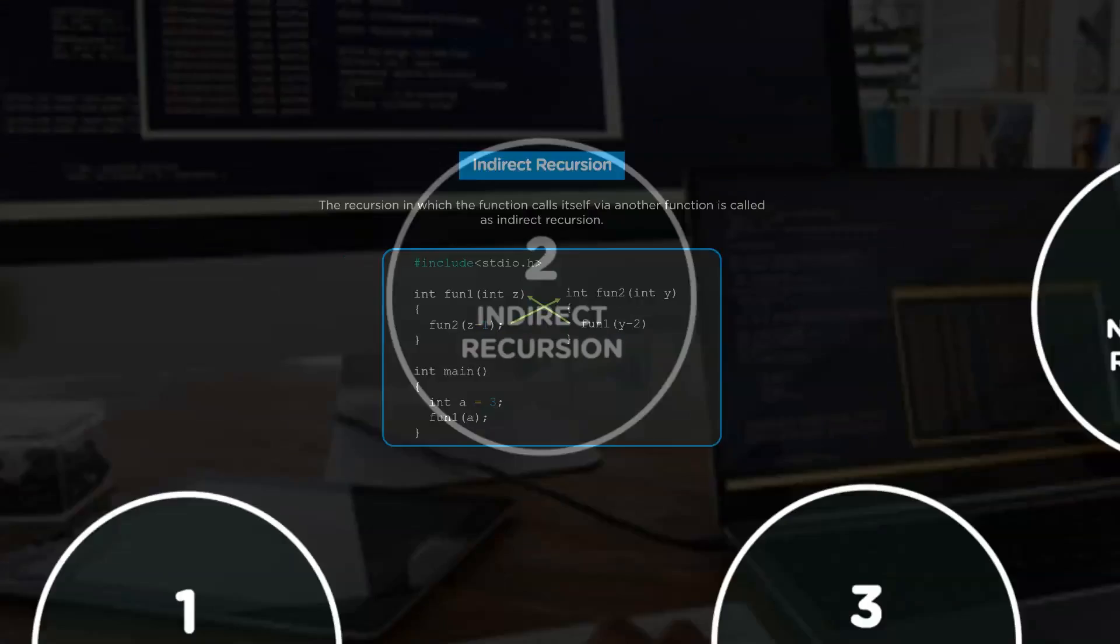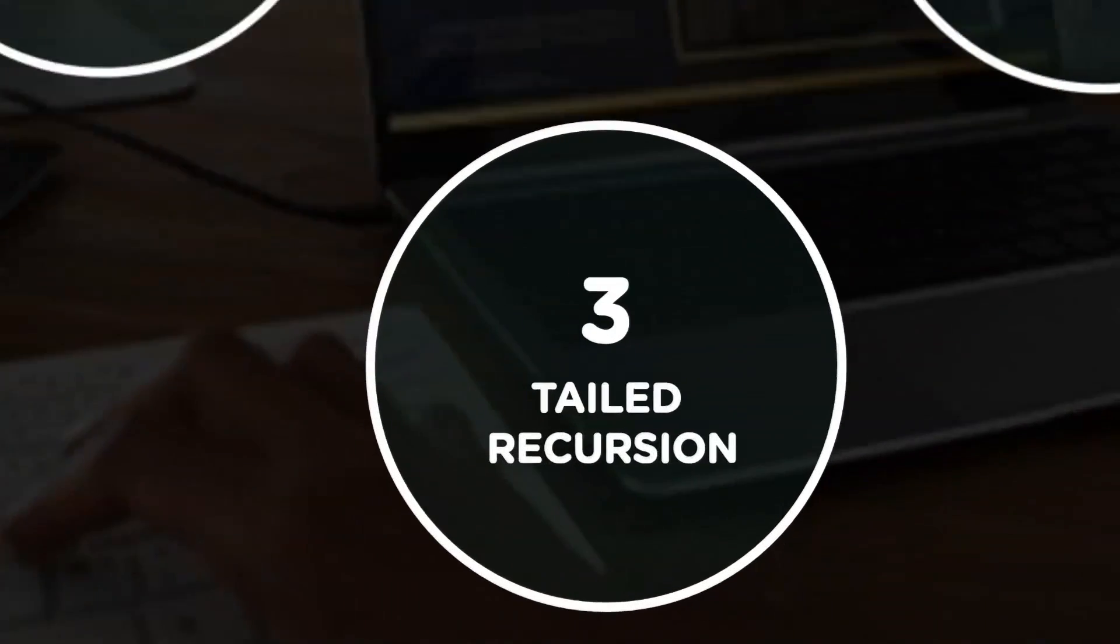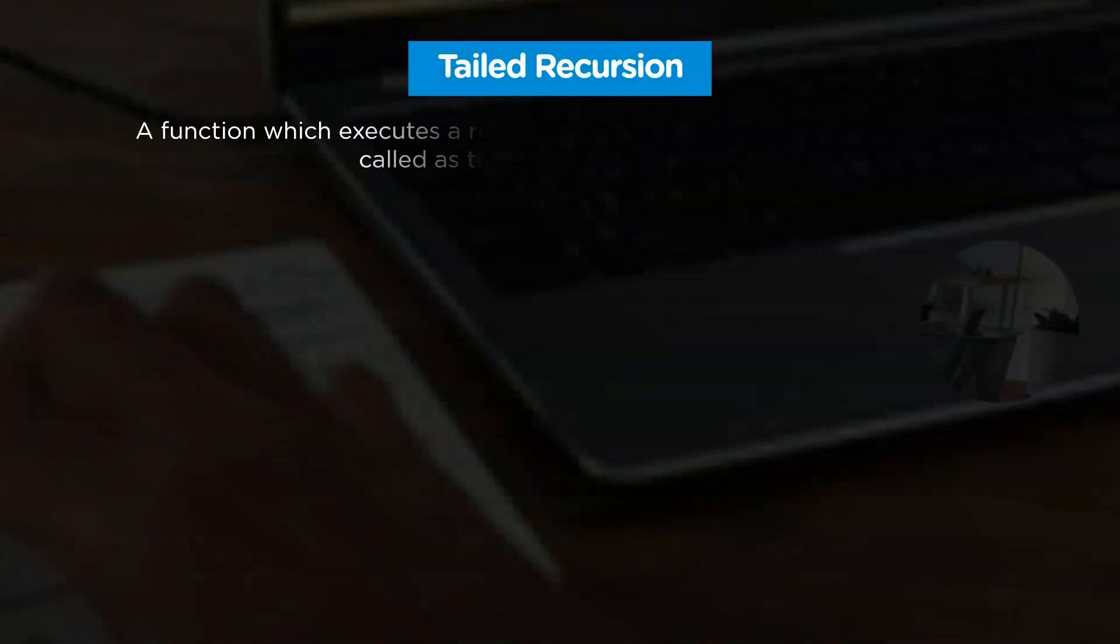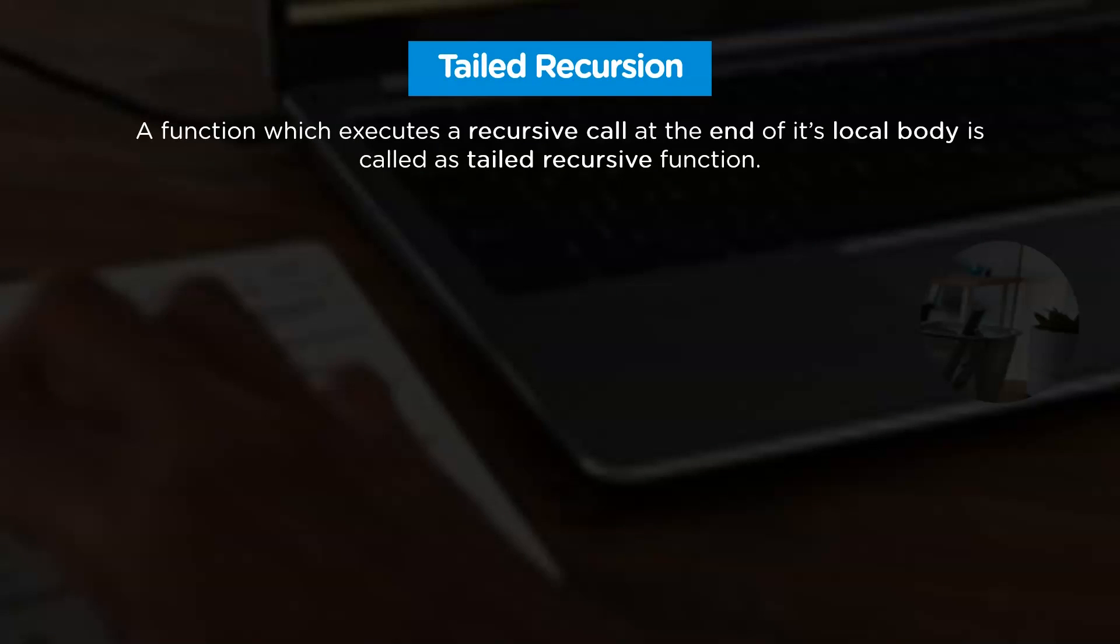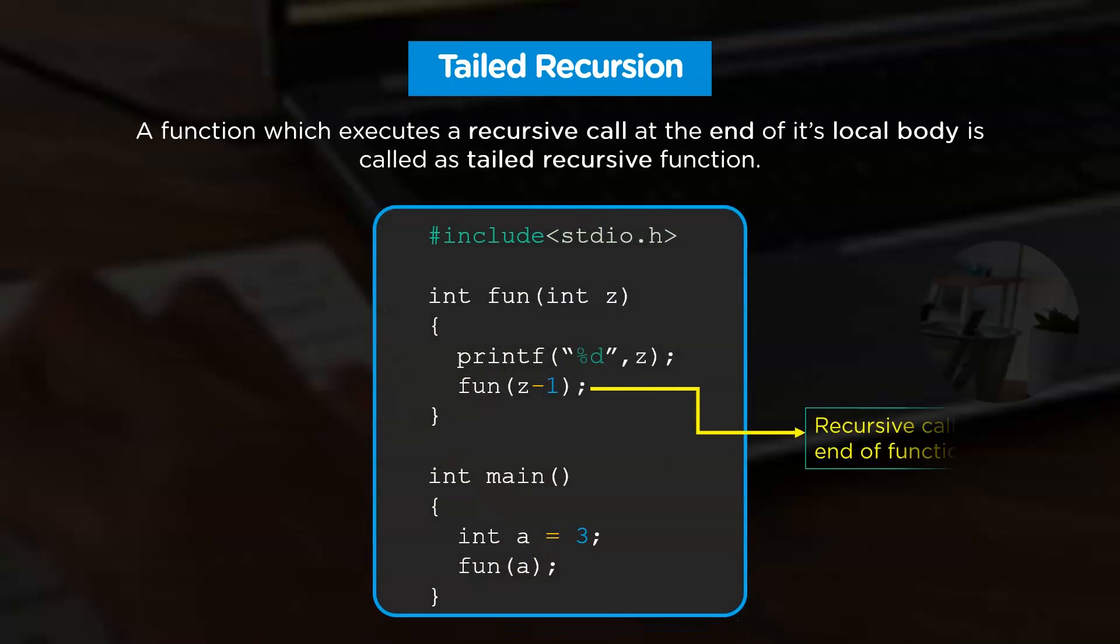Further, we have tail recursion. A recursive function is said to be tail recursive if the recursive call is the last execution done by the function. Let's try to understand this definition with the help of an example. If you observe this program, you can see that the last line that will execute for method fun is recursive call and because of that, there is no need to remember any previous state of our program.